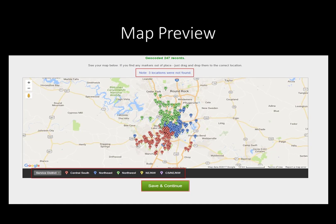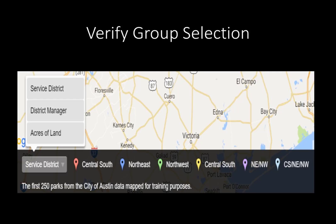The group selection from the initial Validate and Set Options is displayed at the bottom of the map. The group selections available are viewed by clicking the small downward arrow next to the group name in the gray box. Selecting each one will show how the markers of each park change color according to the grouping. In this example, the three choices from the data are Service District, District Manager, and Acres of Land. If no grouping is desired, then all of the markers will be the same color.